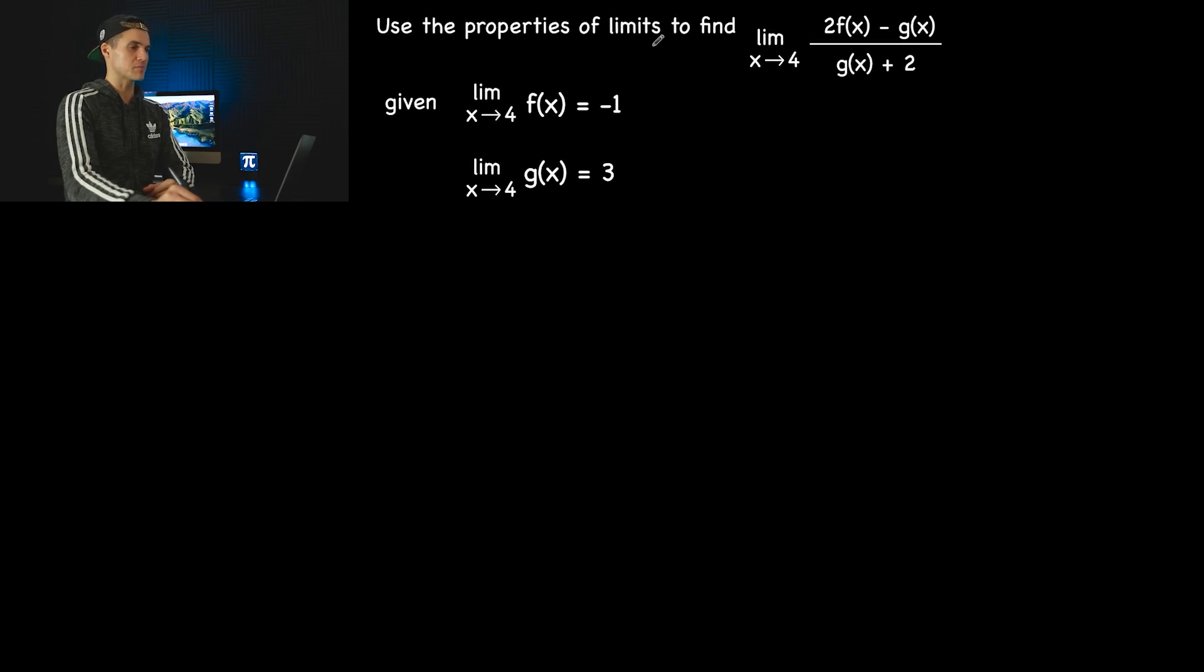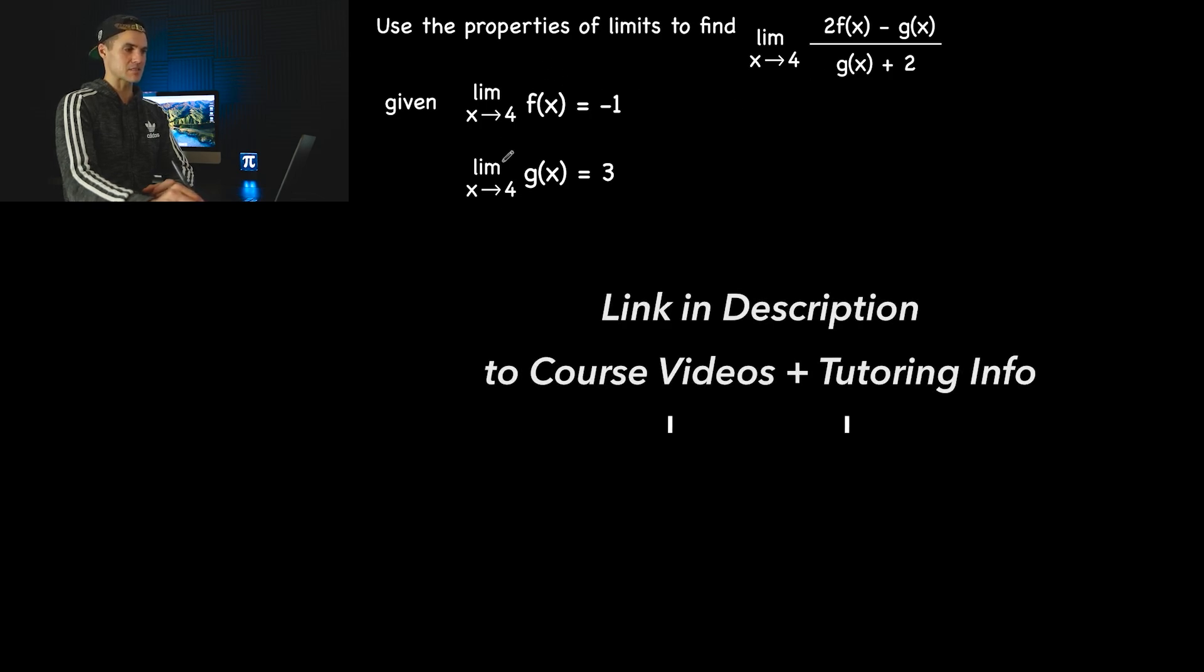So here we have to use the properties of limits to find the limit as x approaches 4 of 2f(x) minus g(x) all over g(x) plus 2, given these limits here. The limit as x approaches 4 of f(x) is negative 1, and then the limit as x approaches 4 of g(x) is equal to 3.